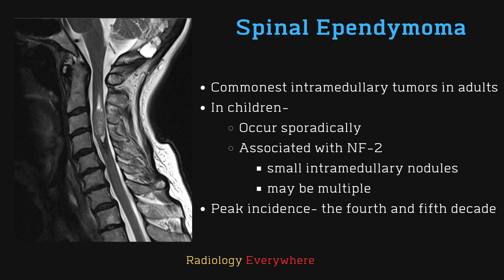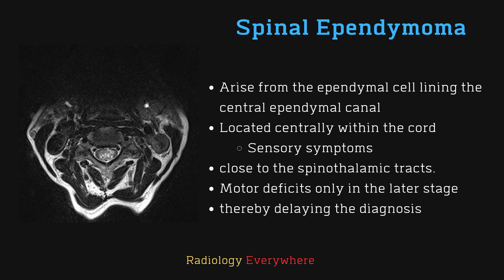The peak incidence for spinal ependymoma is usually in the fourth and fifth decades, but these tumors also occur in young patients. Ependymomas arise from the central ependymal canal, so they are frequently found centrally within the cord. This central location explains the more frequent sensory symptoms and close proximity to the spinothalamic tract.